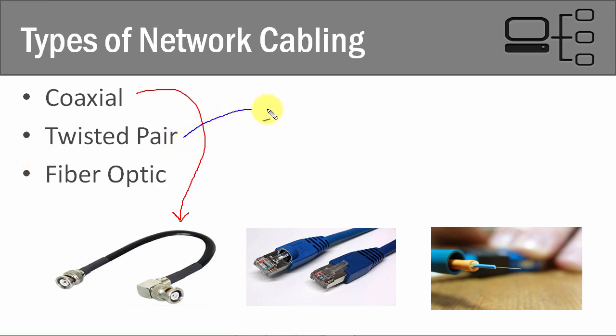The second type is twisted pair, and twisted pair is going to be quite familiar to everybody because this is the most popular type of networking cable being used today in modern networks, both for home networks and for enterprise and business networks. If you go to Best Buy or some other store and buy a new router for your house, it's usually going to be packaged with this type of cable. Or if you're in the office and you had to hook up your laptop, you're going to see this type of cabling.